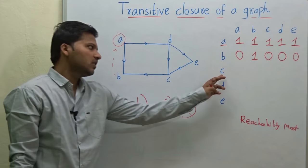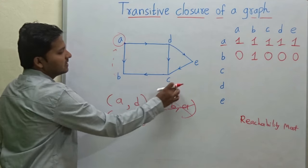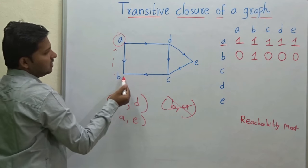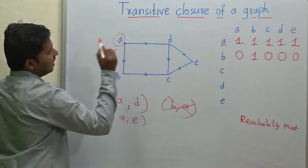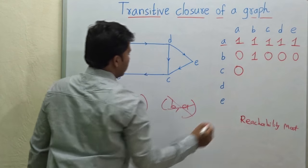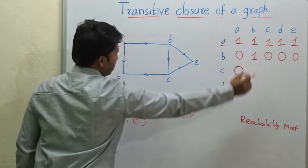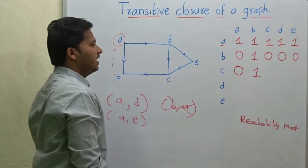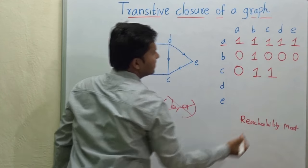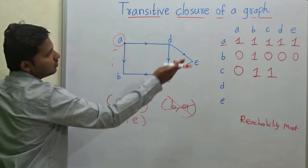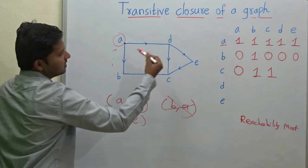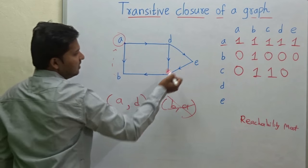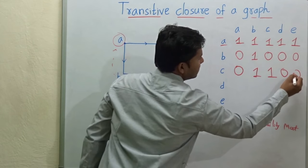For vertex C, can you reach vertex A from vertex C? You can reach vertex B, but you cannot reach vertex A, so the value will be 0. Then from vertex C, can you reach vertex B? Yes, you can reach, so the value is 1. Then from vertex C, can you reach vertex C? Yes, obviously you can reach the vertex itself. Now from vertex C, can you reach vertex D? No, you cannot reach vertex D, so the value is 0. From vertex C, can you reach vertex E? No, you cannot reach, so the value is 0.